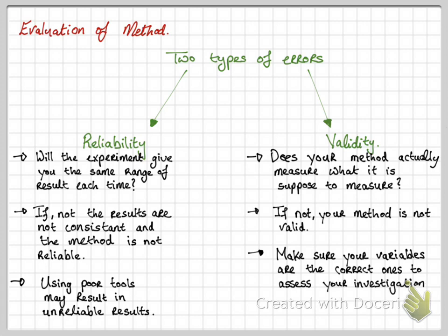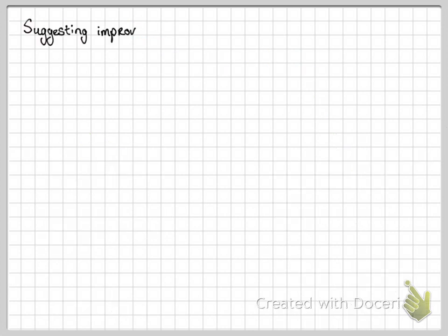Make sure your variables are the correct ones to assess what you want to investigate. For an example here, if you're looking at a person's BMI, is measuring their weight a good way of assessing their BMI? Or another way of thinking of this is, if you want to see is age related to height, is measuring their weight again a good way of assessing it? Have you chosen the correct variables? If not, your experiment is not valid. And does your tools give you a valid set of data?